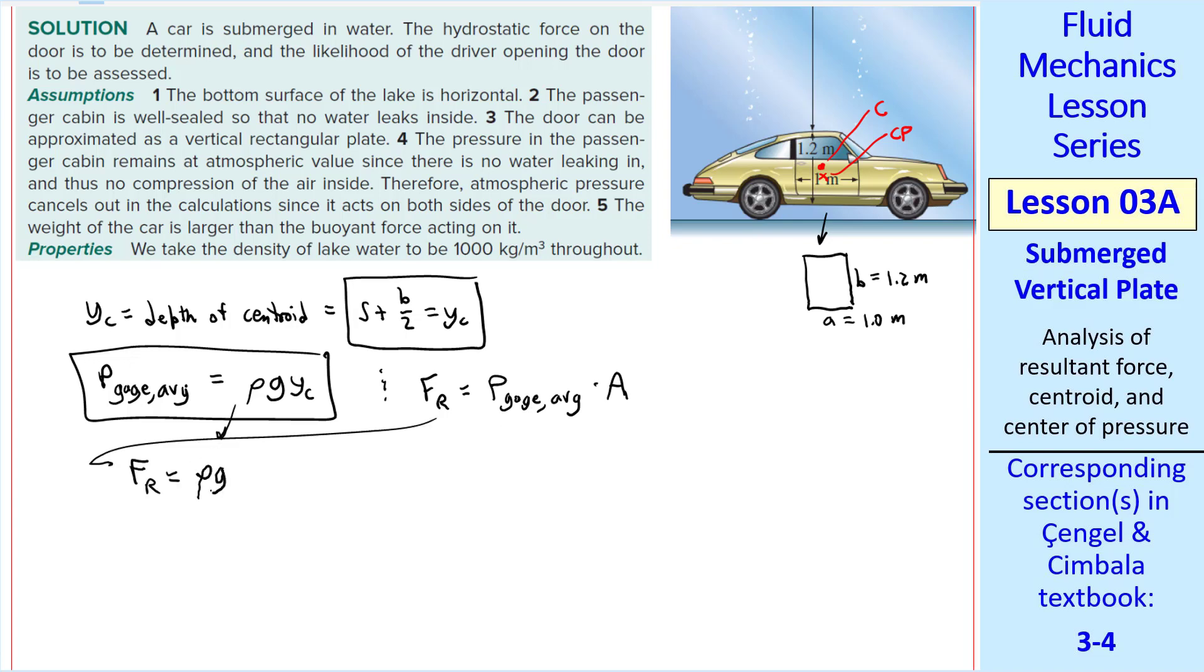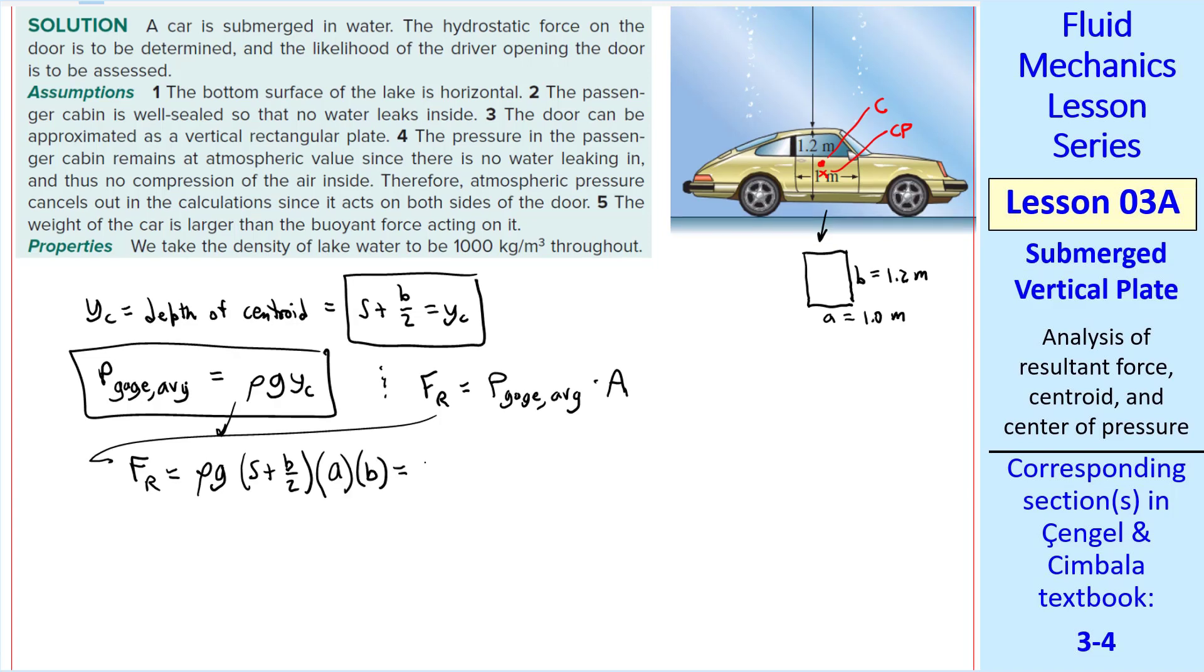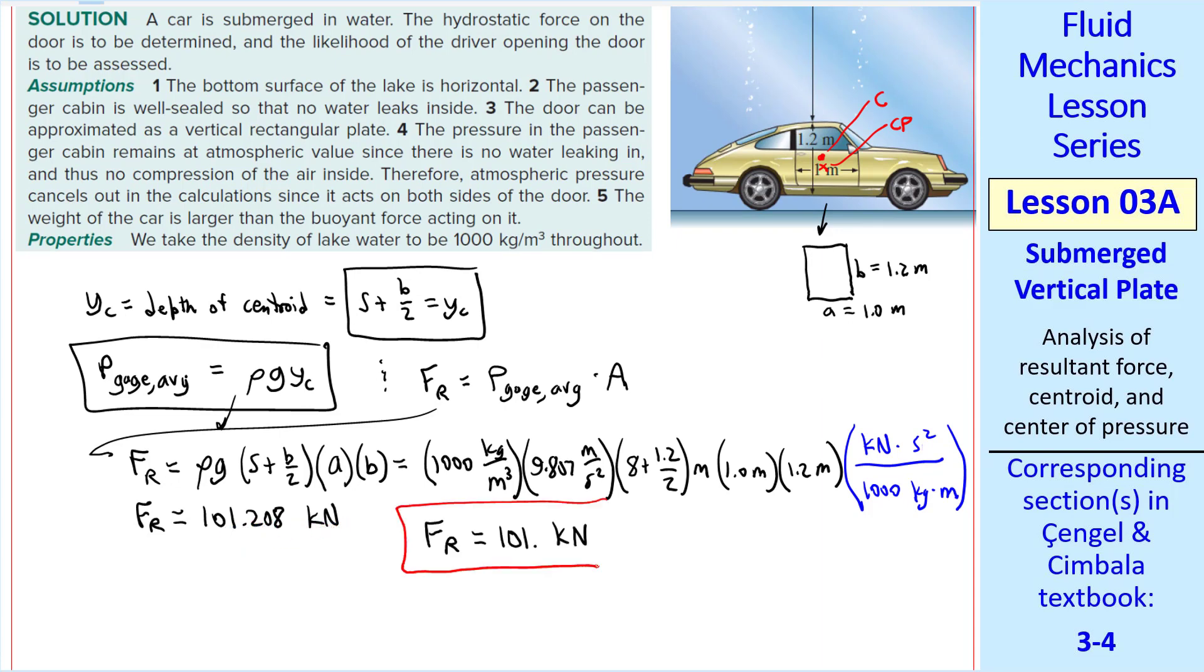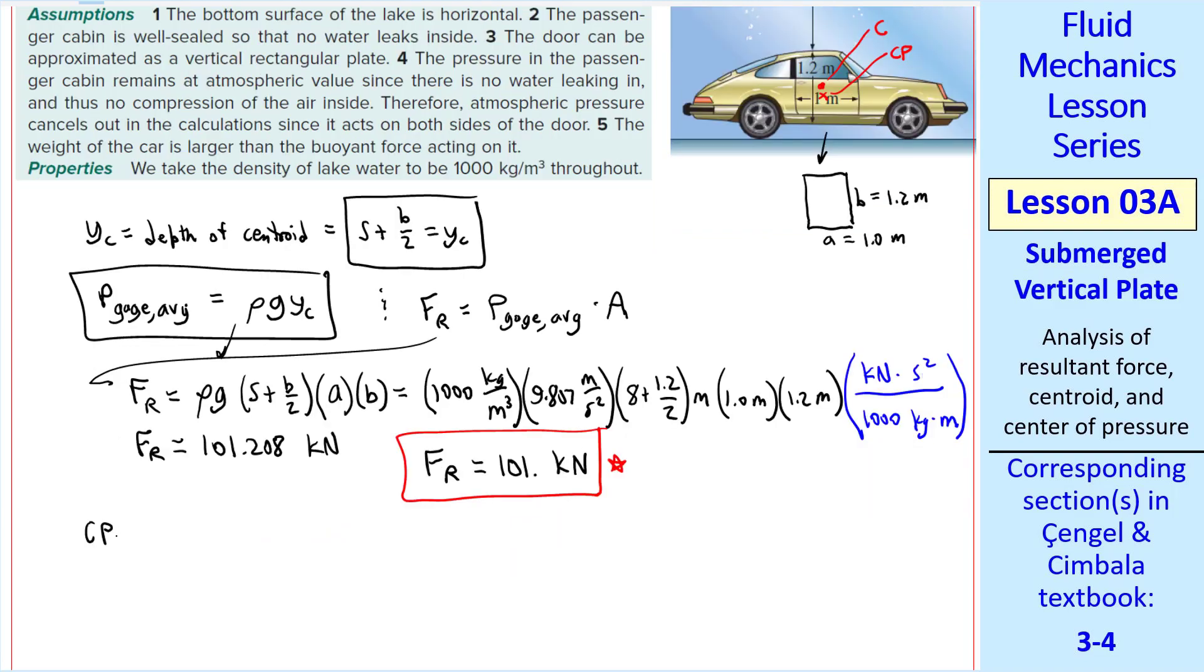The average gauge pressure on the door is rho G times YC, and the resultant force is that average gauge pressure times the area of the door. So FR is rho G, YC, which is S plus B over 2, times the area, which is AB, and I'll plug in the numbers. Density of water, gravitational constant, 8 plus 1.2 over 2, those are meters. 1.0 meters is A, and 1.2 meters is B. We need only one unit conversion factor. A kilonewton is 1,000 kilogram meters per second squared. You can verify that all the units cancel except kilonewtons. I get 101.208 kilonewtons, which I round to three digits as our answer, 101 kilonewtons.